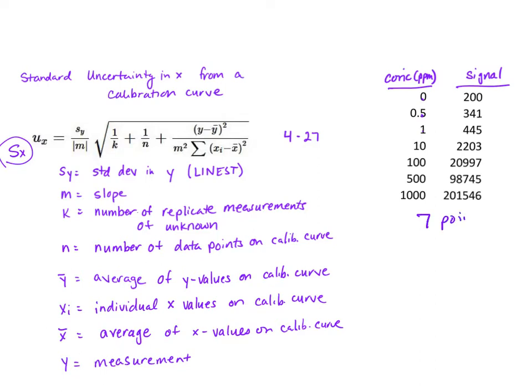In that case n would be seven. Okay, y bar is the average of the y values on the calibration curve, so that's going to be your signal, absorbance or peak area, peak height, whatever it may be.